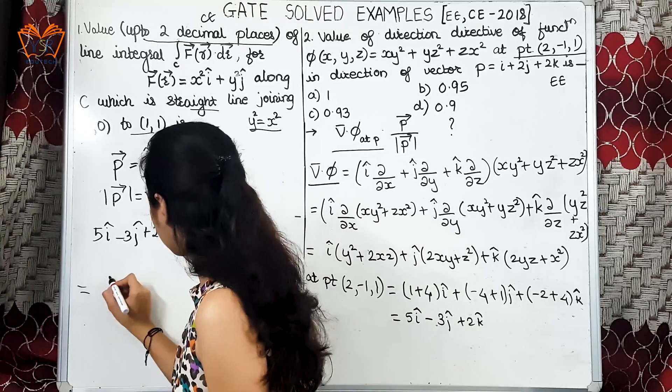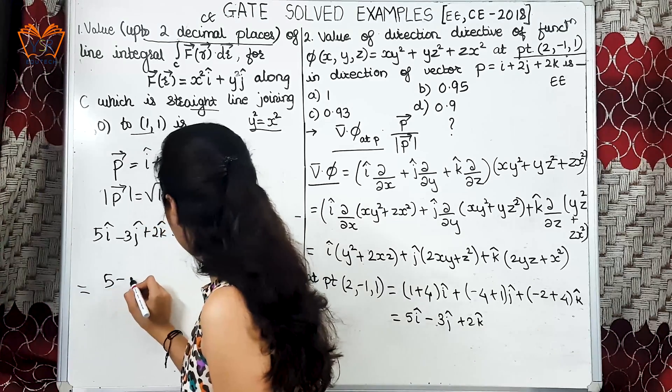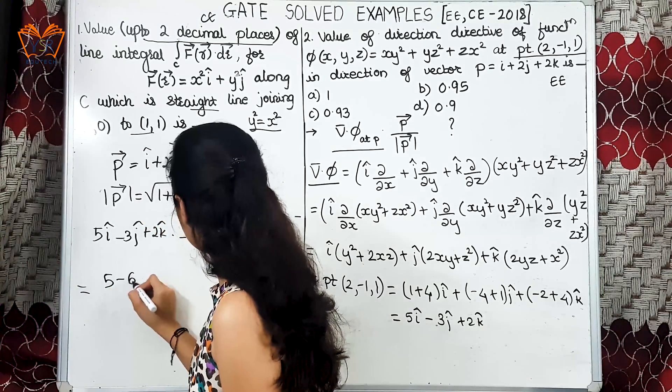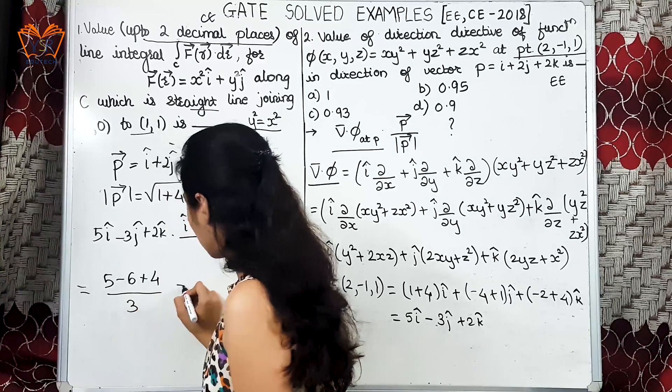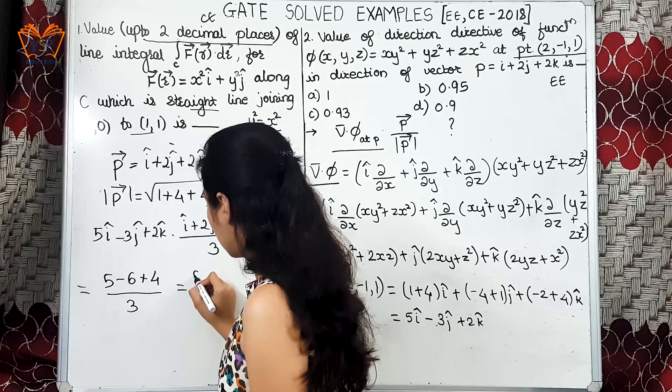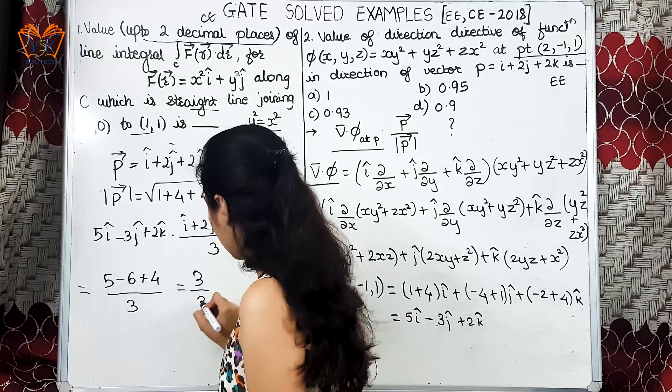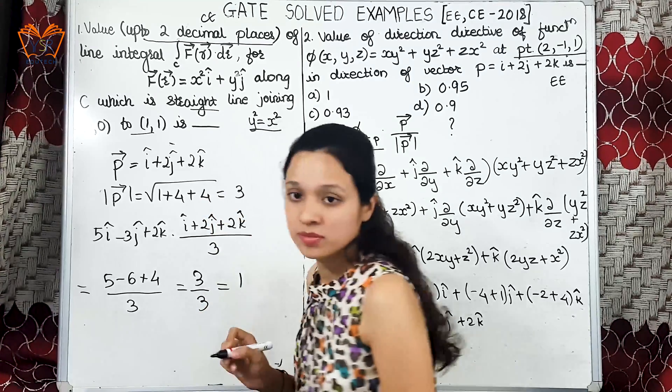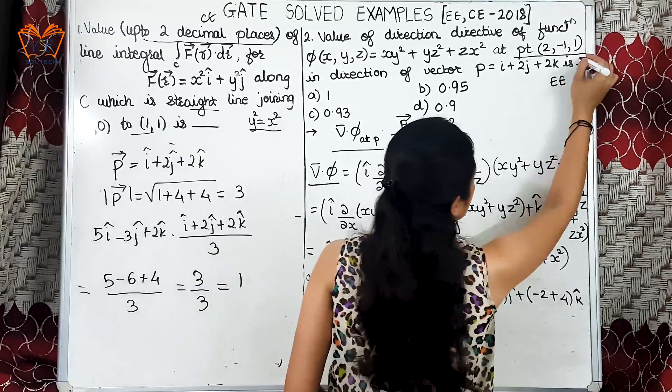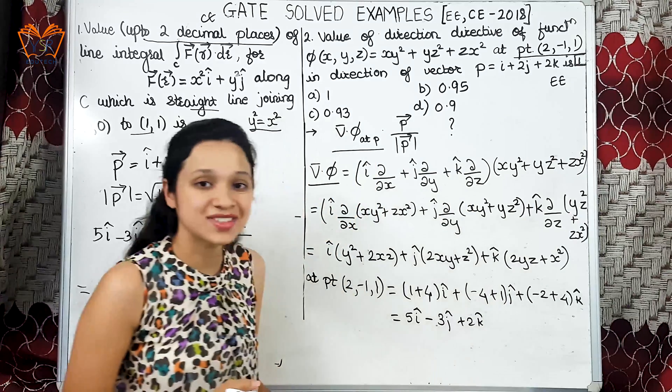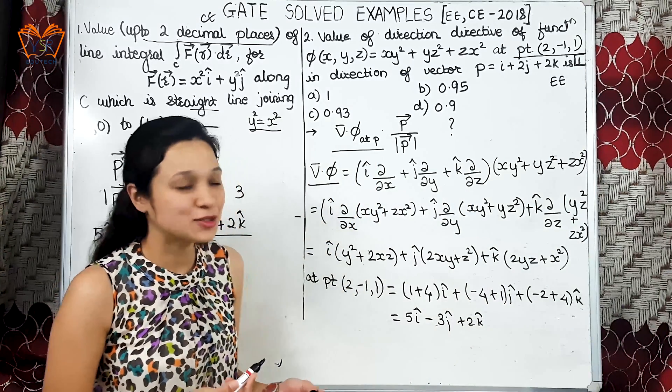So we get 5 minus 6 plus 4 divided by 3. So this will be 3 by 3, that is equal to 1. So the directional derivative, value of directional derivative is 1. Hope you understood. Thank you.